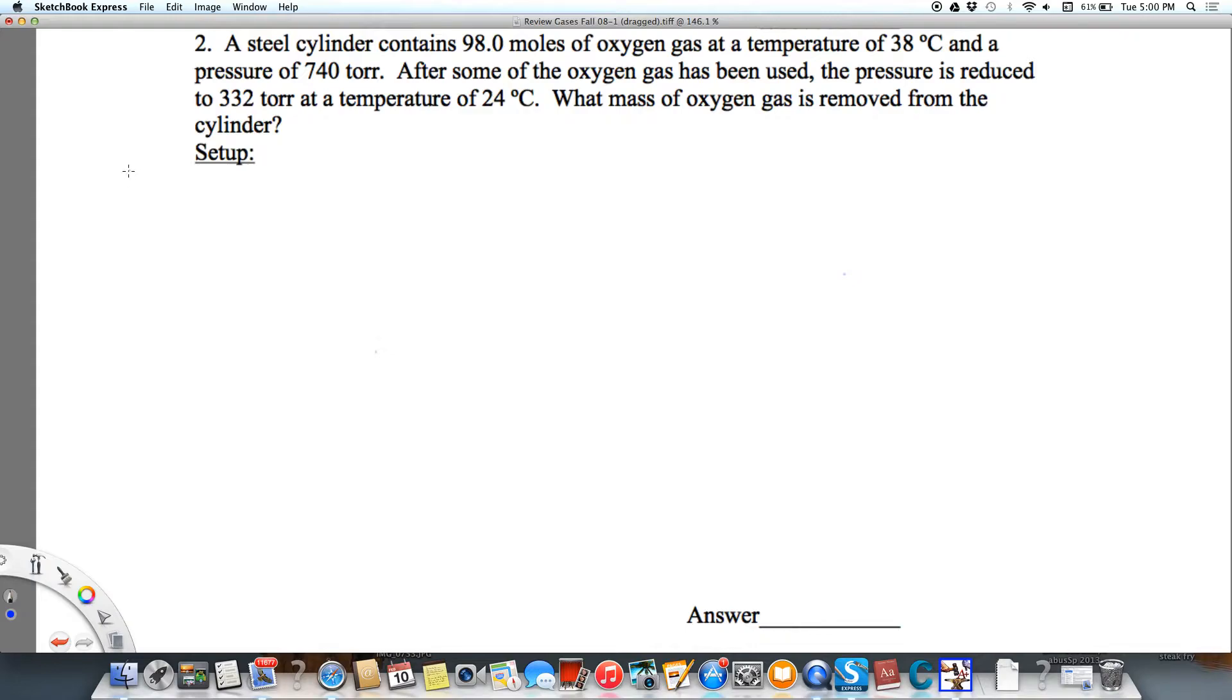Okay, so first we know that PV equals nRT, right? And R is a constant, so R equals PV over nT. So no matter what gas we have, PV over nT will always equal R. What that means is,